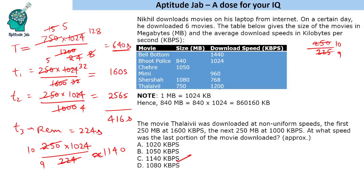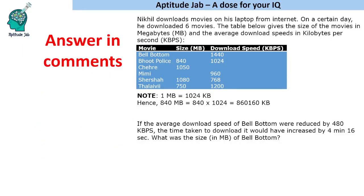So those are all the questions we solved — all calculation-based. They give you data in a specific format and you use the time-size-speed relationship to find answers. Here's a bonus question: the average download speed of Bell Bottom was reduced by 480 KB/s, and the time taken would have increased by 4 minutes 16 seconds. Find the size of the movie in megabytes. Please solve this and answer in the comments. Thanks for watching — have a great day!